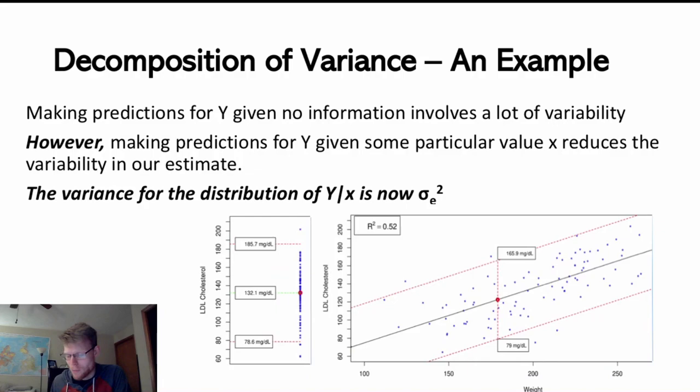But now we can also measure the variance of Y given X, the conditional variance. Given a particular X value, the variability in our estimate is now going to be sigma sub E squared. You can think of the E as standing for error, or you might also call it the residual variance. It's the variance of what our model can't explain, the variance of what's left over from our model.